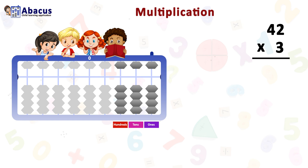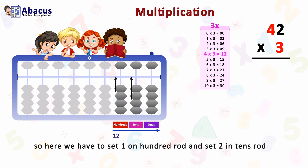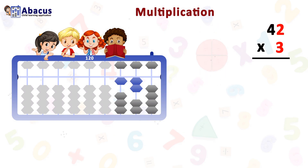We have three total numbers, so we take these three rods from the right side. First, we multiply four by three — four threes are 12. So we set 12 starting from the hundreds rod: set one on the hundreds rod and set two on the tens rod. Now we multiply two by three — two threes are six.